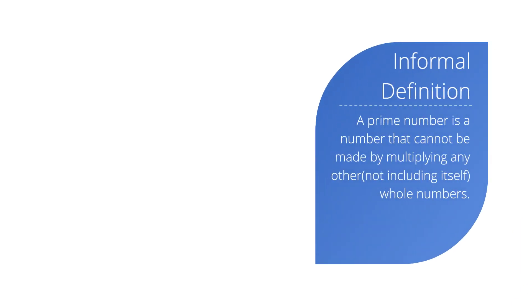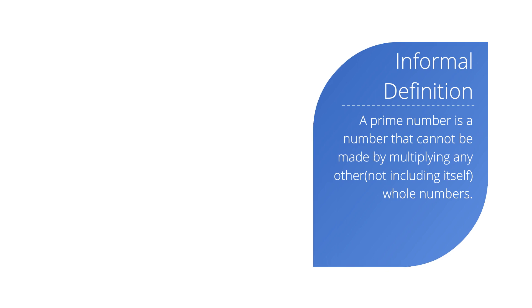Here is an informal definition of prime numbers. A prime number is a number that cannot be made by multiplying any other whole numbers. By other whole numbers, we mean that this number does not include itself.